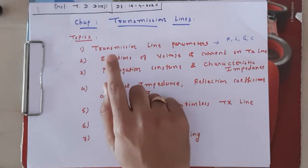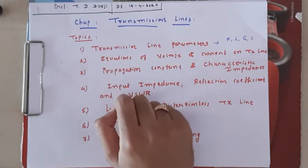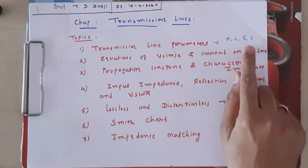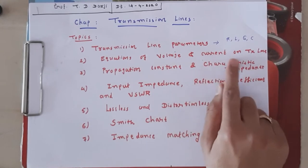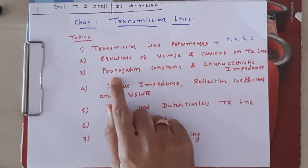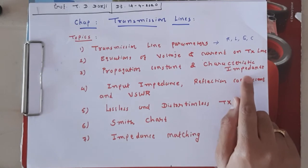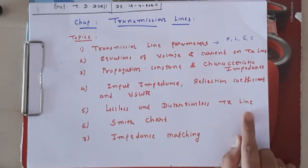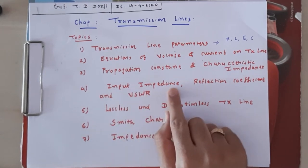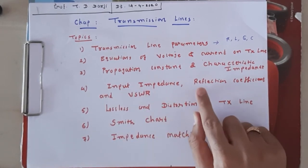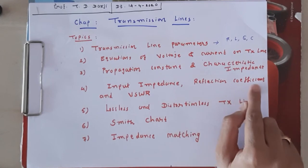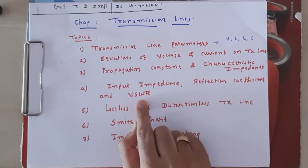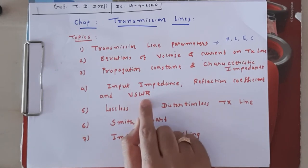Till now we have discussed transmission line parameters: R, L, G, C, equations of voltage and current on the transmission line, propagation constant, characteristics impedance, lossless and distortionless transmission lines, and input impedance. In today's lecture we will discuss voltage reflection coefficient, current reflection coefficient, and VSWR or SWR — standing wave ratio of a transmission line.